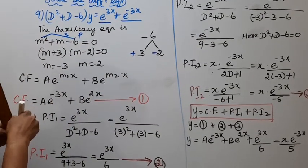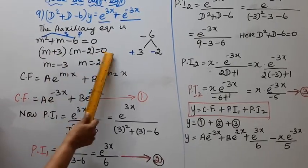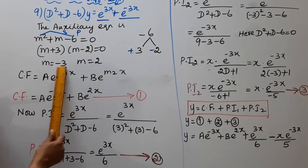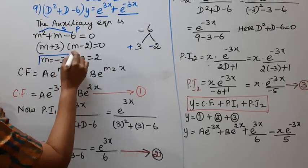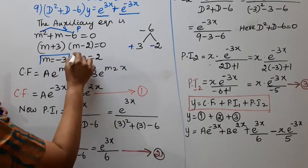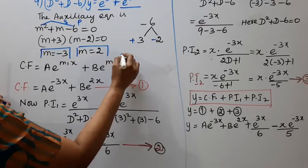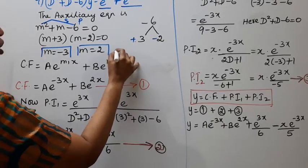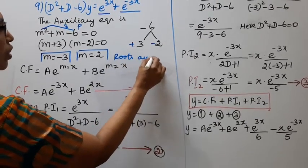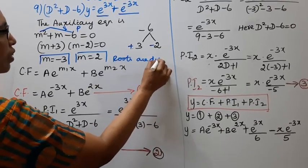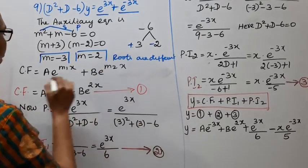So we factor as (m + 3)(m − 2) = 0. From m + 3 = 0, m = −3. From m − 2 = 0, m = 2. The roots are different.